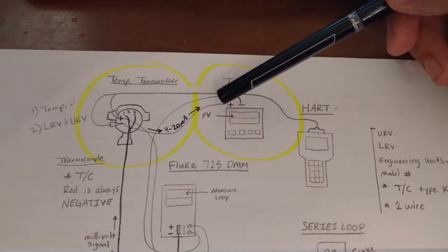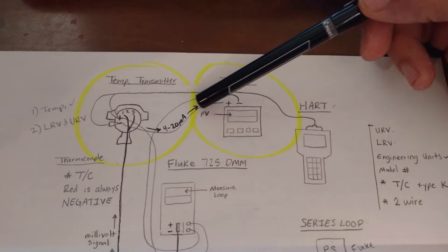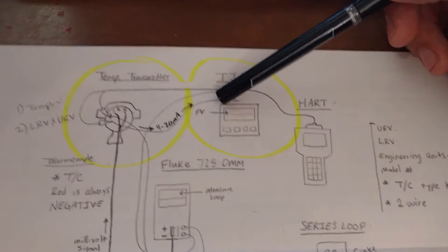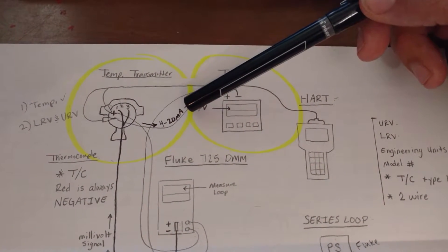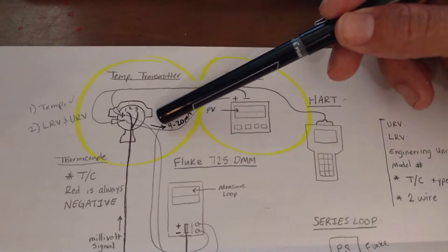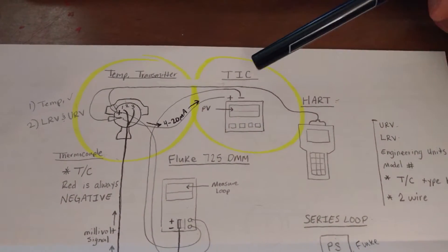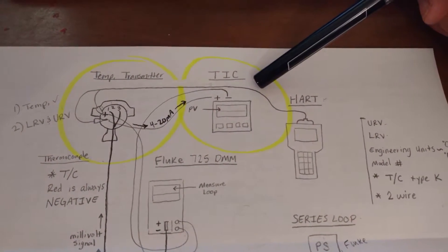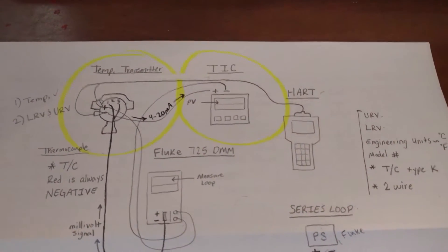And then this signal, which is going to be somewhere between 4 to 20 milliamps, because that is what the industry uses, is going to go to another device. And in this example, a temperature indicating controller.